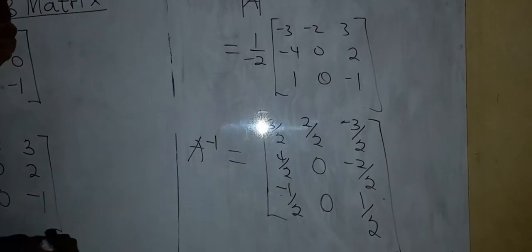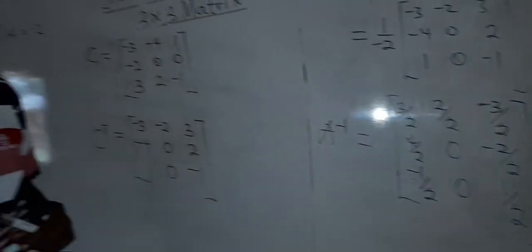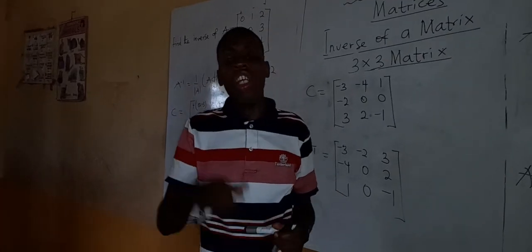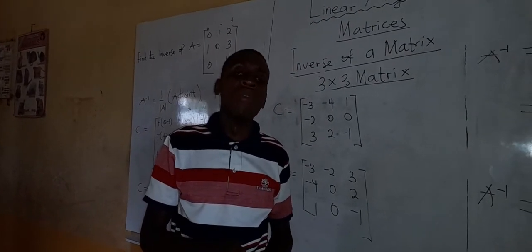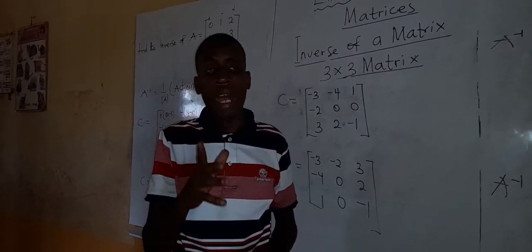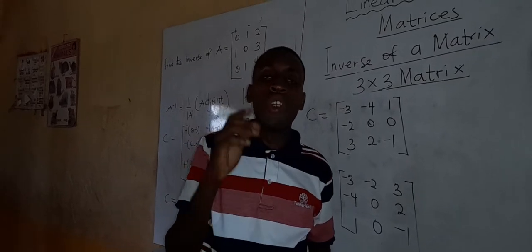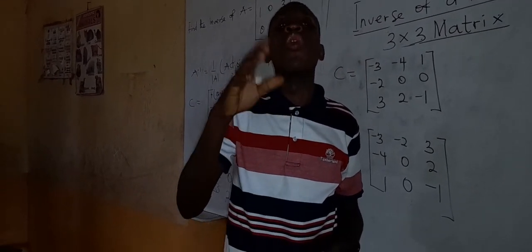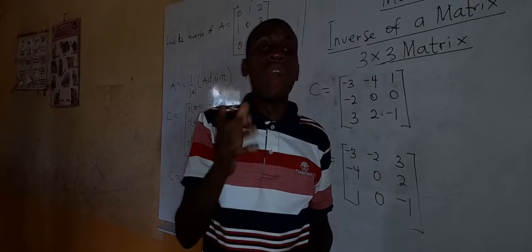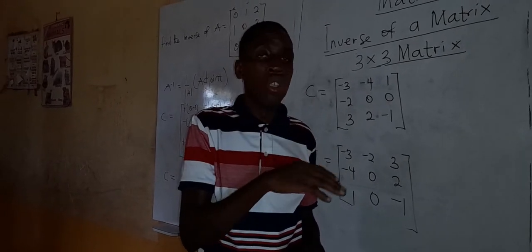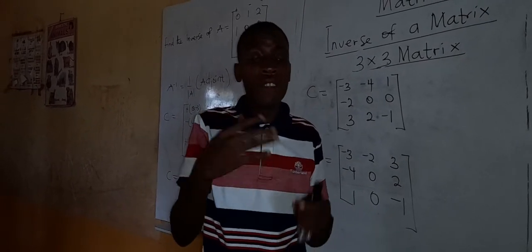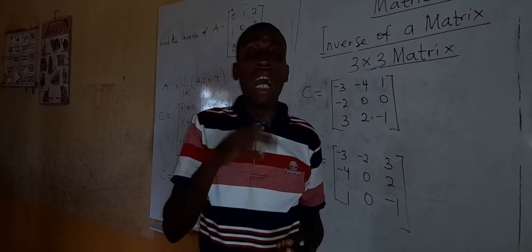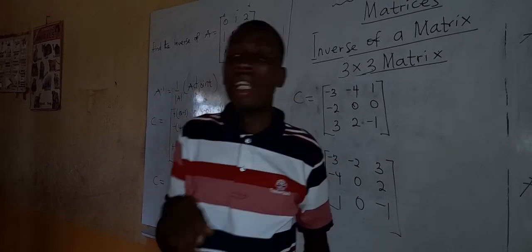I hope you get that. I will give you a sample question so that you try and leave your answers in my comment box. Remember, the adjoint of a 3×3 matrix is the transpose of the cofactors. I will leave an example on the board for you to solve. Until we meet again, bye bye.